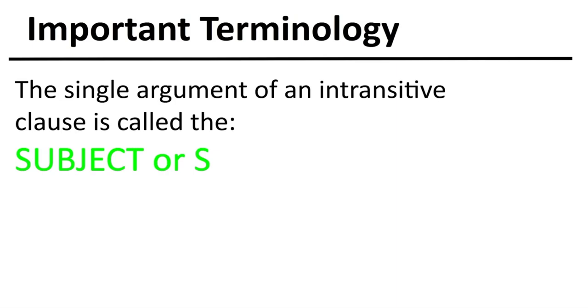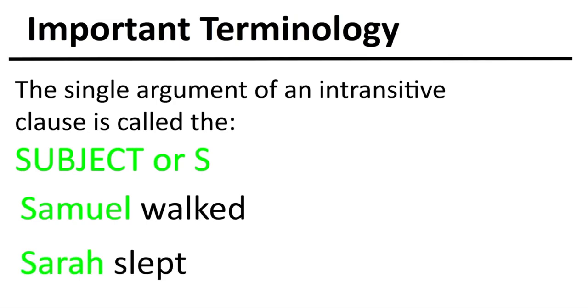The single argument of an intransitive clause is called the subject, often abbreviated as S. Now, the subject is the one who is both performing the action and who is experiencing the action. In the sentence Samuel walked, Samuel would be the subject, since Samuel is the one who is both doing the walking and experiencing it. In the sentence Sarah slept, Sarah would be the one who is the subject, since Sarah is the one who is doing and experiencing the sleeping.